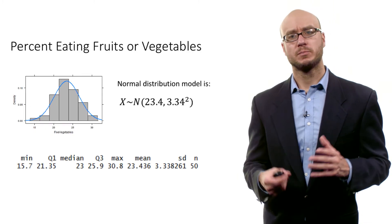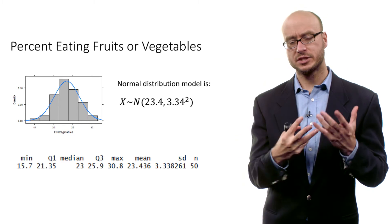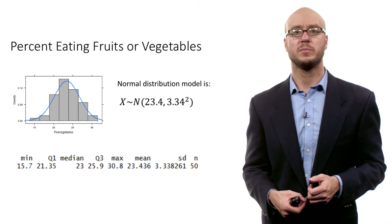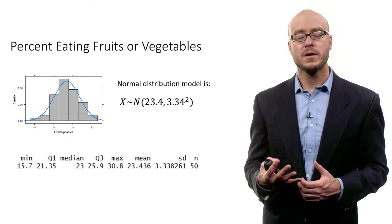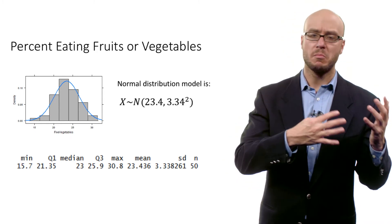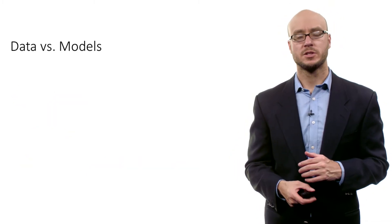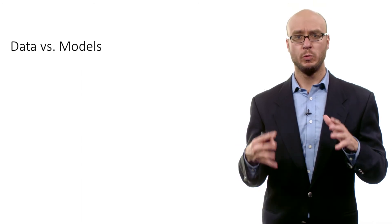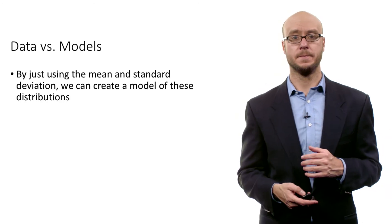And then if we look at percent eating fruits and vegetables, comparing our set of data, the histogram, with that normal distribution model based on a mean of 23.4 and a spread of 3.34 squared, you can see that the model's roughly in accordance with the data. So we might say, for each of these distributions, we could use the normal distribution model as an approximation for the actual distribution in the data.